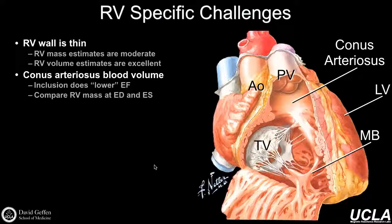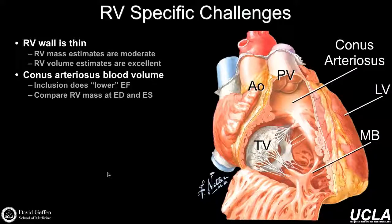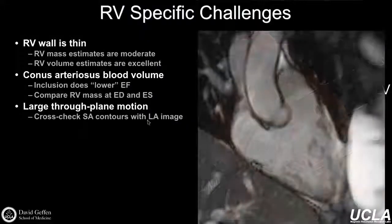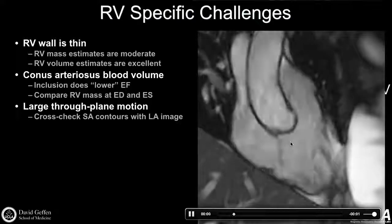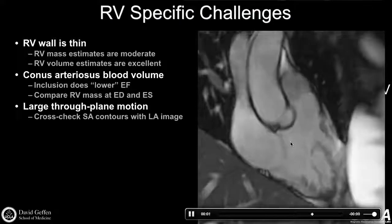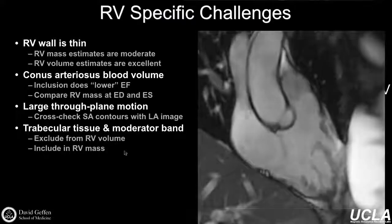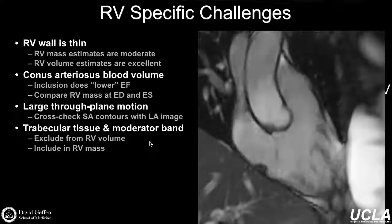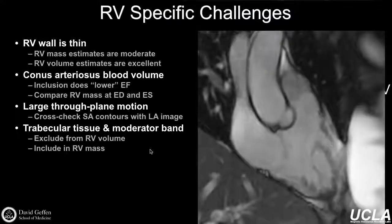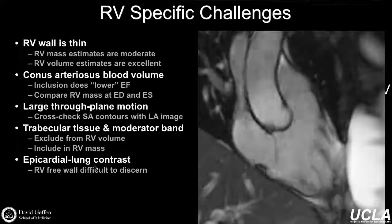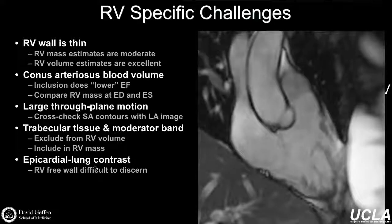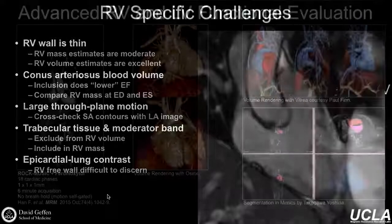Some RV-specific challenges: the RV wall is very thin, making estimates of its mass quite tricky. There's also the conus arteriosus, just below the pulmonary valve — a conduit for blood flow that's part of the ventricular blood pool but doesn't contribute much function, and different institutes include it in different ways. There's also large through-plane motion for the RV — even more than the LV — so you have to be careful about which slices you include, to avoid inadvertently including left or right atrial volumes in your ventricular volume analysis. There are additional challenges with trabecular tissue and the moderator band, and the epicardial-lung contrast can be relatively poor, making it difficult to see the RV wall itself.